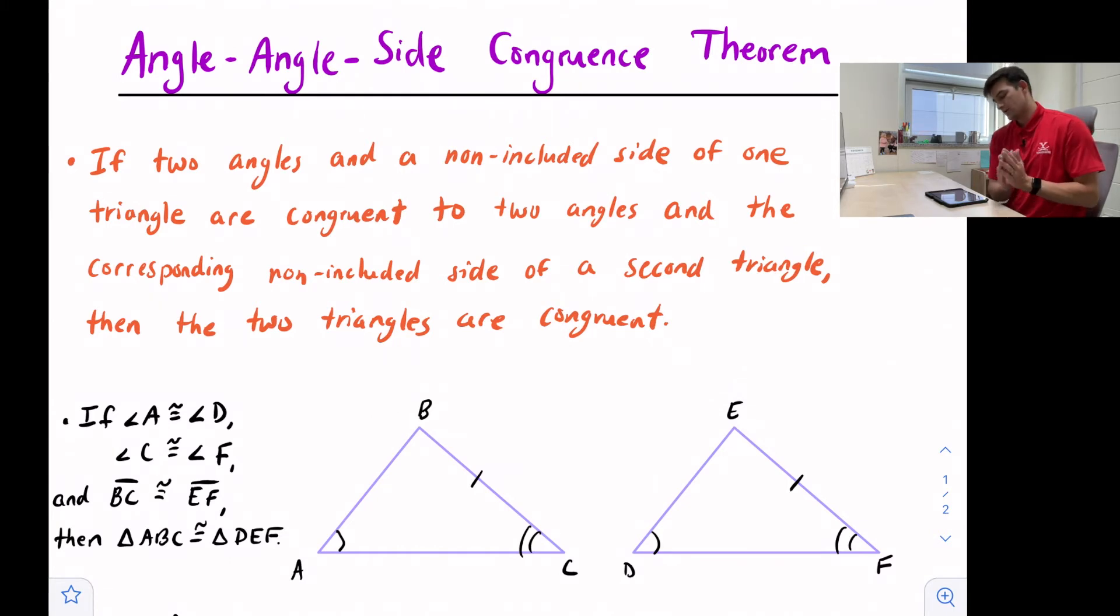So why does angle-angle-side work? Well, if we have two triangles and two of their angles are already congruent, the third angles theorem tells us that this third angle is also congruent.